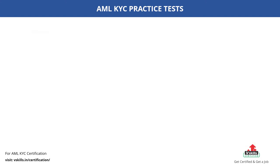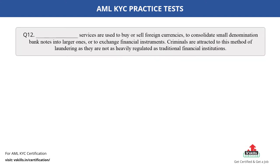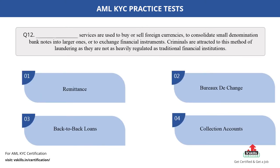Question number 12. Dash services are used to buy or sell foreign currencies, to consolidate small denomination bank notes into larger ones, or to exchange financial instruments. Criminals are attracted to this method of laundering as they are not as heavily regulated as traditional financial institutions. Fill in the blank. The options are: A. Remittance; B. Bureaus to change; C. Back-to-back loans; D. Collection accounts. The correct answer is option B.